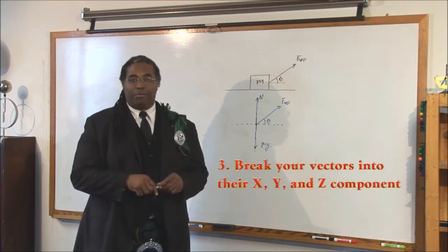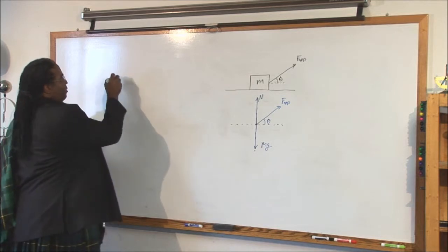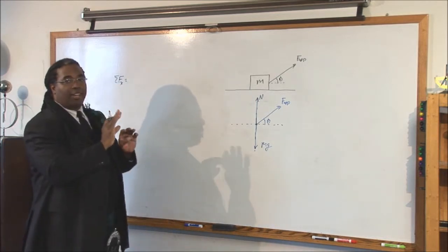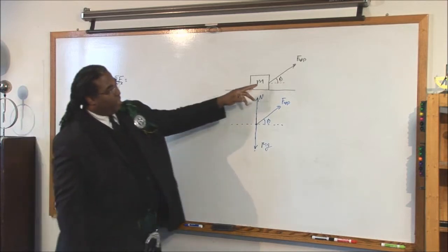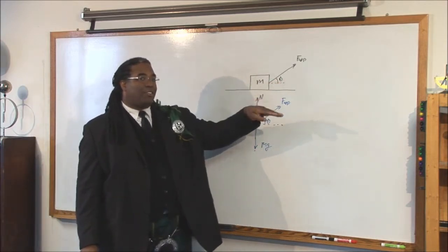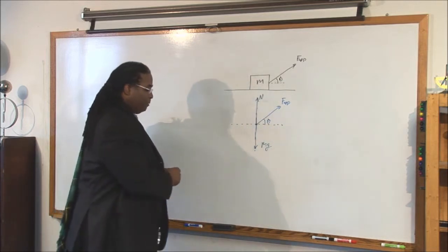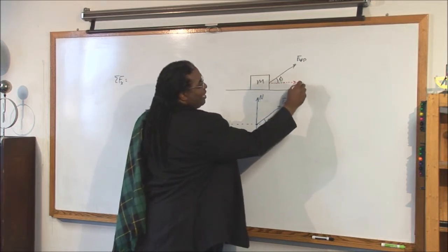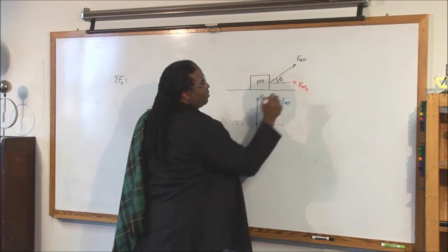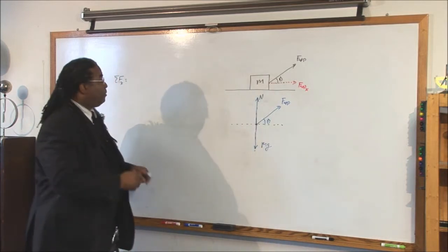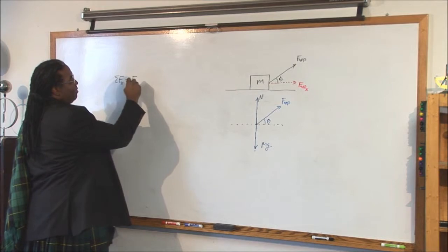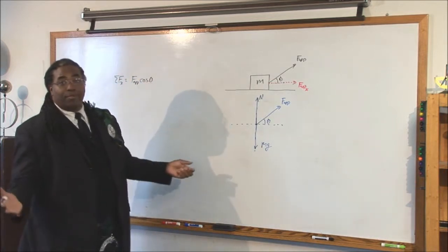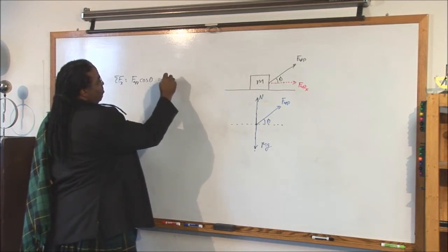Step three: break them into their x and y components. Let's do the x first. The sum of the forces in the x is equal to — we just look at all the arrows going left and right. The applied force is going to the right, but it's also going up. So we need to find the component of this vector that's actually pulling to the right, which is F applied sub x — F applied times cosine theta. There are no other forces left or right, so this equals mA.